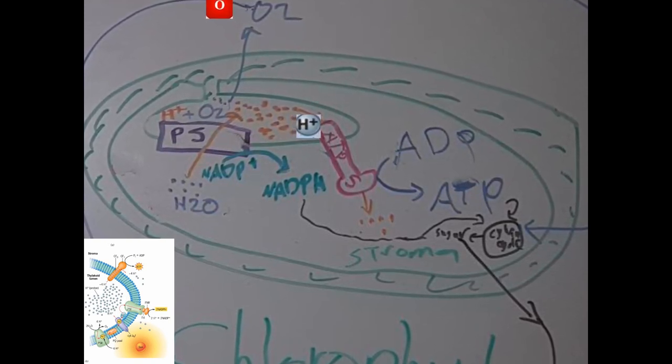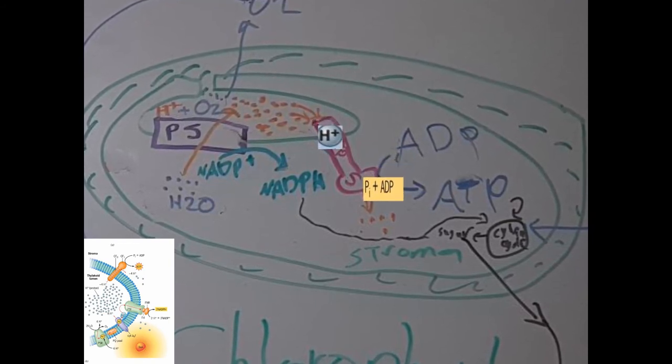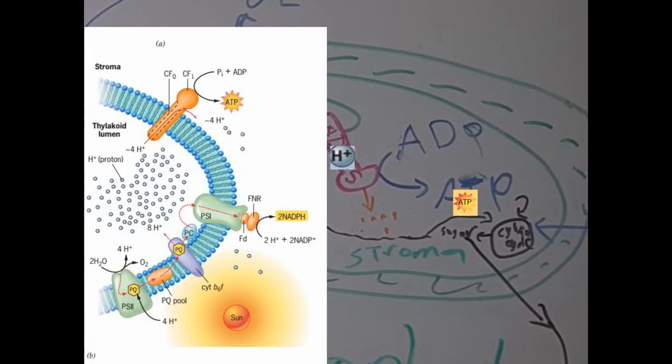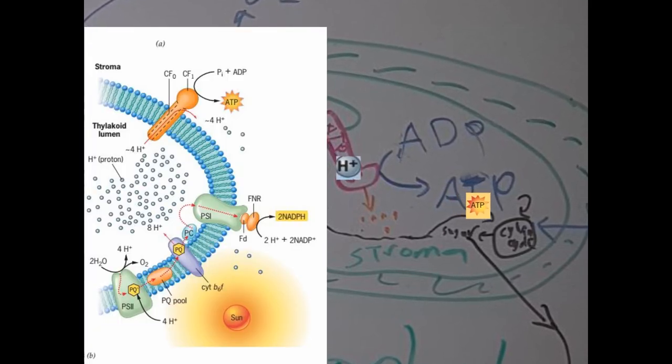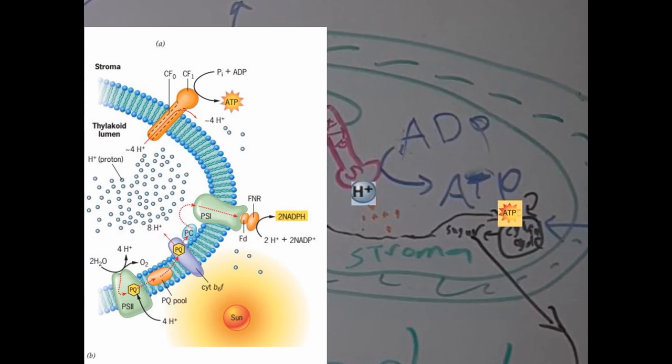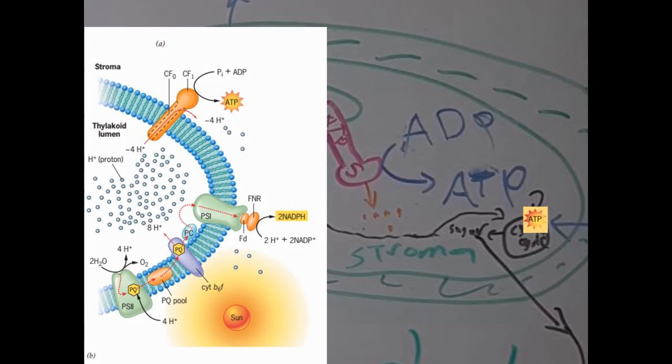This movement allows a change in conformation and the fixation of ADP and phosphate to create ATP. And then ATP is incorporated into the Calvin cycle and used as a source of energy to fix carbon dioxide and create sugars.